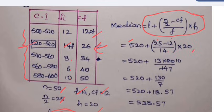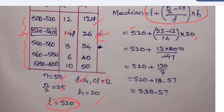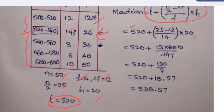On simplification here, we obtained 520 plus 130 by 7. 130 by 7, after simplification and converting into decimal fraction, it gives 18.57 approximately. So 520 plus 18.57 gives 538.57. This is the required median.